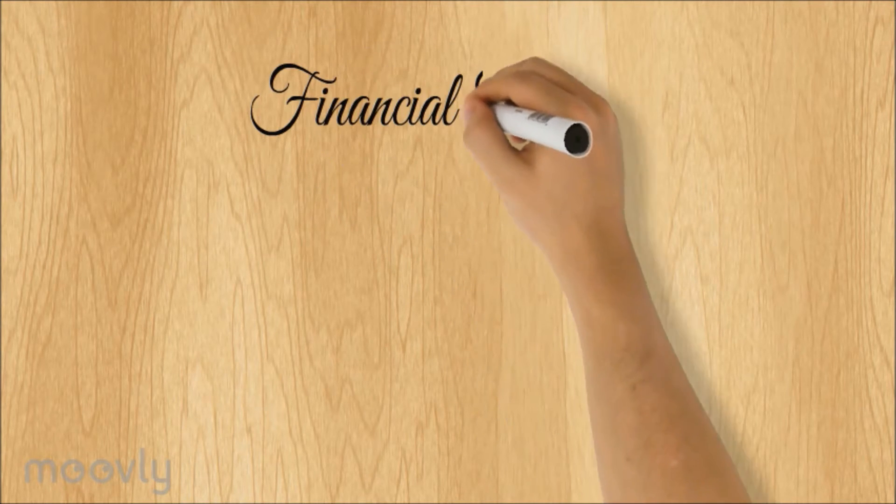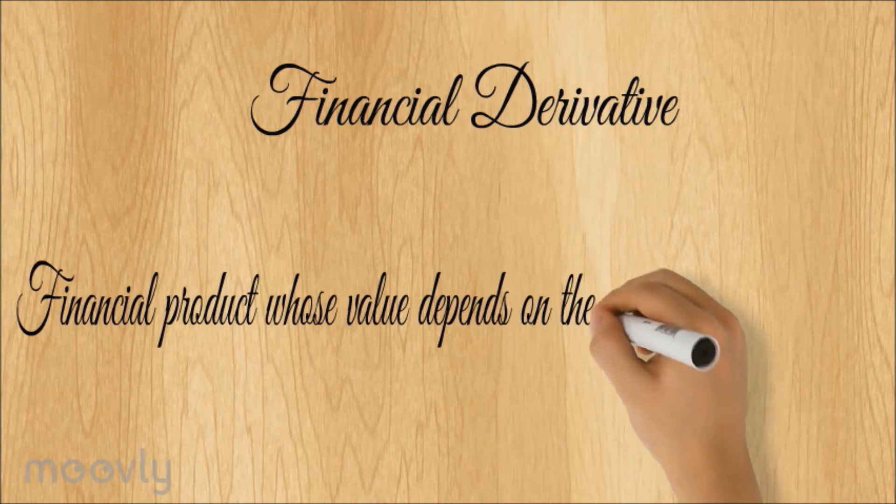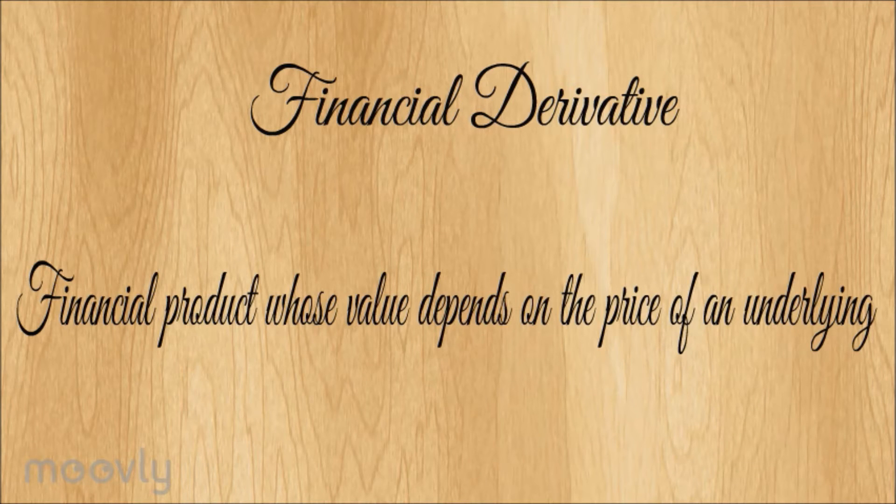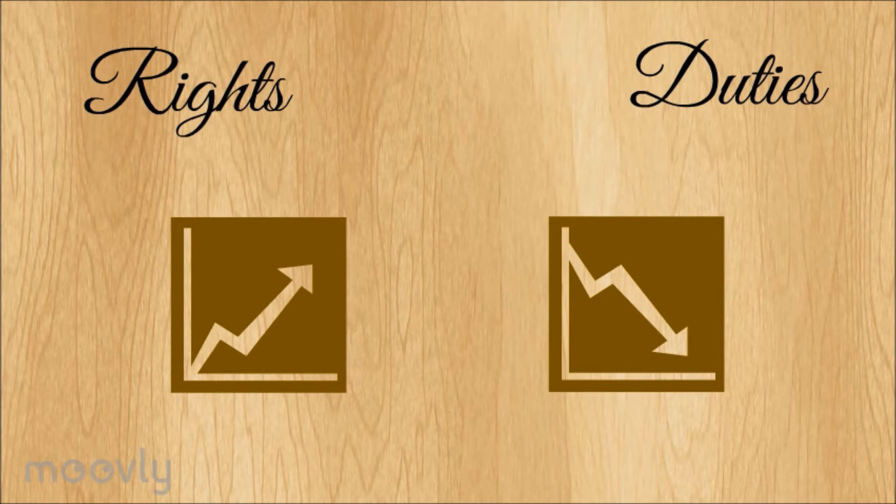Before getting to it, we should first recall the definition we gave of a financial derivative in the last video. This definition states that a derivative is a financial product whose value depends on an underlying asset, which actually means that a derivative is a contract that gives either rights or duties and whose value either increases or decreases through time depending on the underlying price.